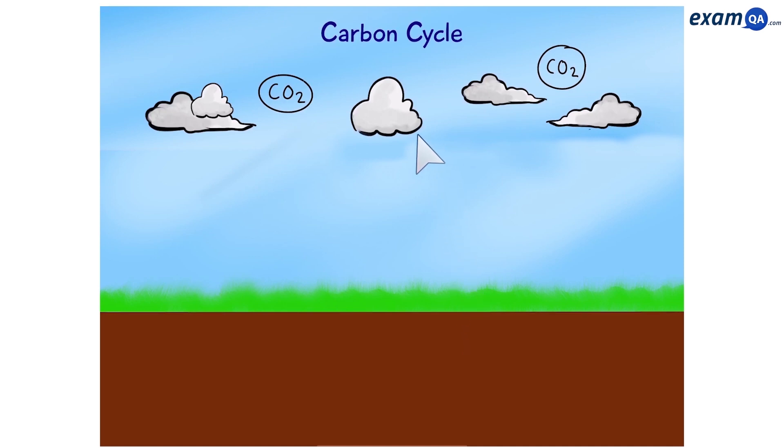Carbon in the form of carbon dioxide is taken in by plants through a process called photosynthesis. In addition to plants we also have algae which are small microscopic organisms that do the same thing.